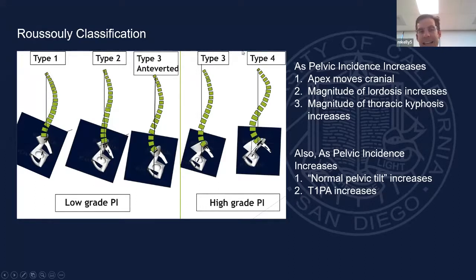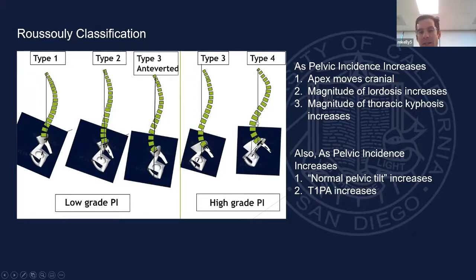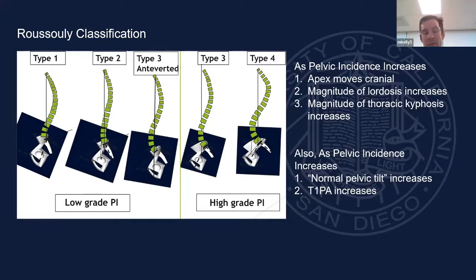As pelvic incidence increases, the apex of lordosis moves rostral, the amount of lordosis increases, and compensatory thoracic kyphosis increases too. Types two, three, and four are just spectrums of the same backwards-S shape. As pelvic incidence increases, so does pelvic tilt and C7 SVA. That's why aiming for a T1 PA of 12 is not the right number — it varies with pelvic incidence. Normal pelvic tilt increases with pelvic incidence, so aiming for a PT less than 20 is also not appropriate.